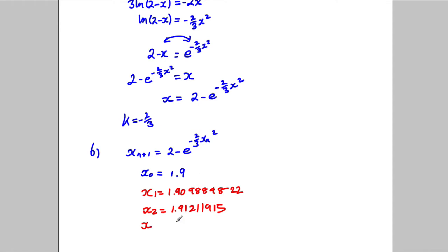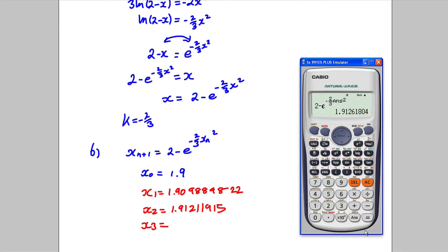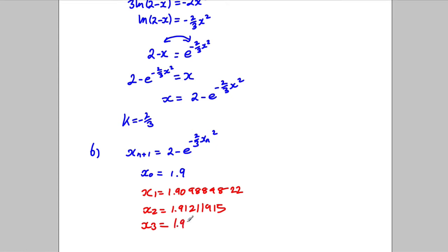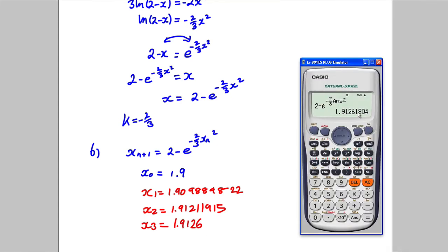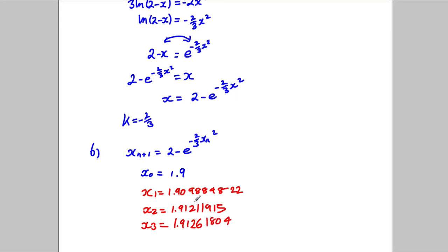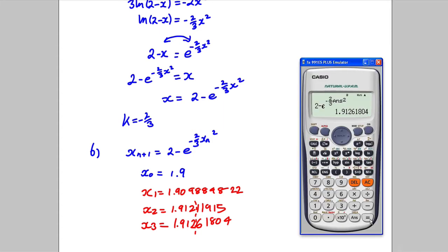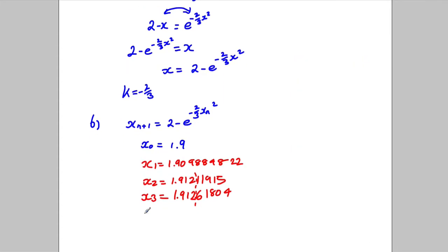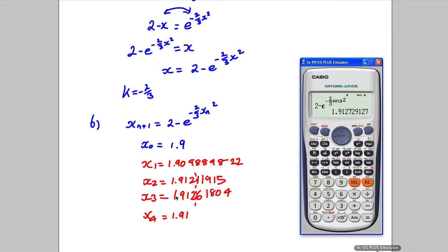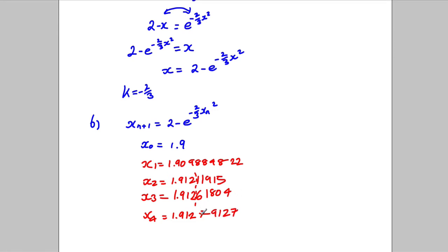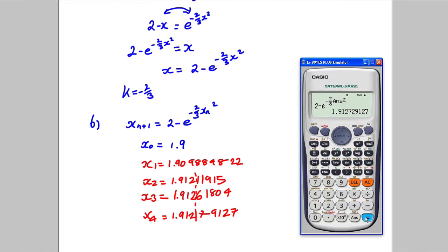Still moving to 3 decimal places. x₃: press equals again — 1.91261804. It has stopped moving to 3 decimal places. Press equals one more time to check: x₄ = 1.91279. It stays at 1.9127 to 3 decimal places.